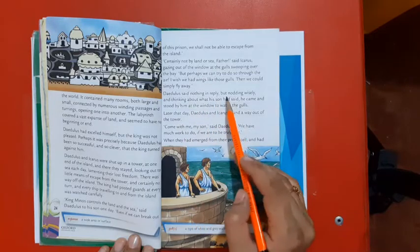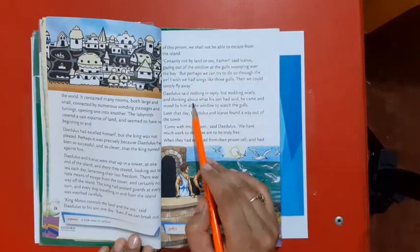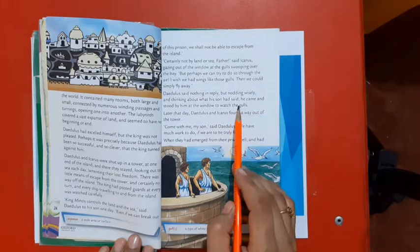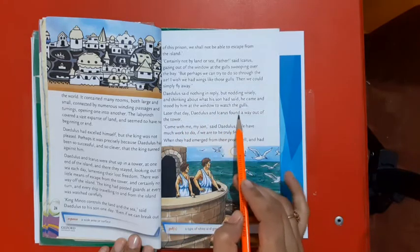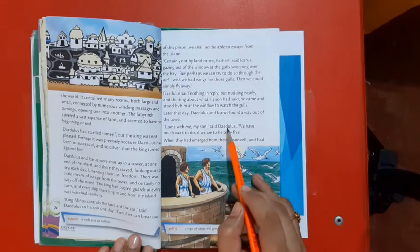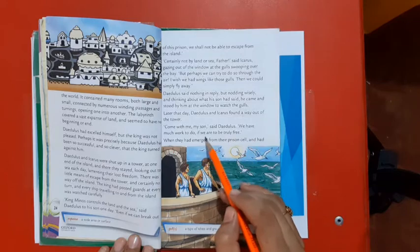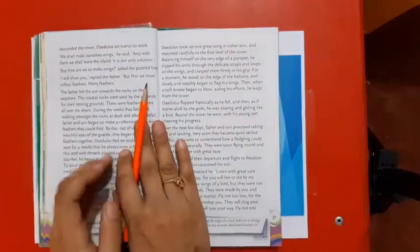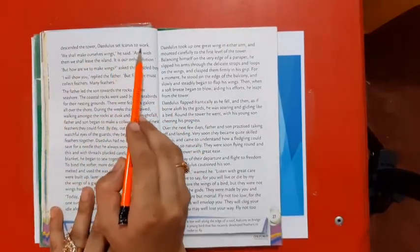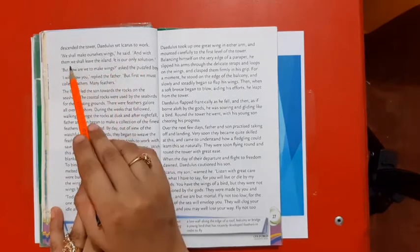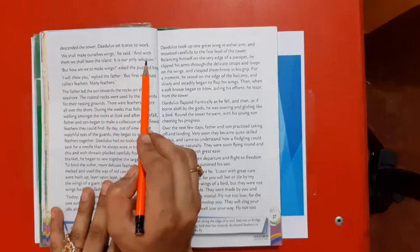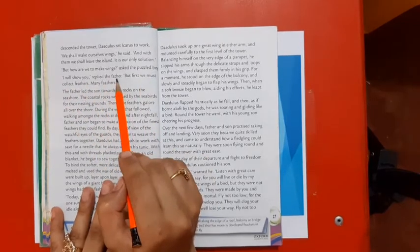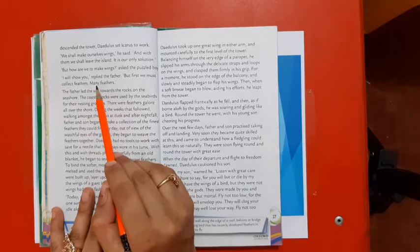Daedalus said nothing in reply, but nodding wisely and thinking about what his son had said. He came and stood by him at the window to watch the gulls. Later that day, Daedalus and Icarus found a way out of the tower. Come with me, my son, said Daedalus. We have much work to do if we are to be truly free. When they had emerged from their prison cell and had descended the tower, Daedalus said to Icarus, We shall make ourselves wings. It is our only solution. But how are we to make wings, asked the puzzled boy. I will show you, replied the father. But first we must collect feathers, many feathers.